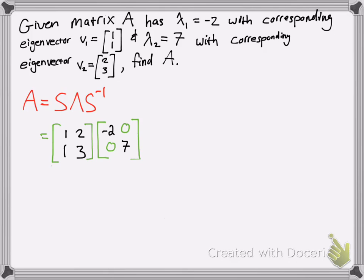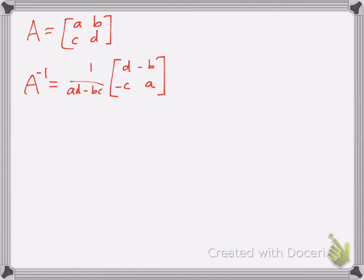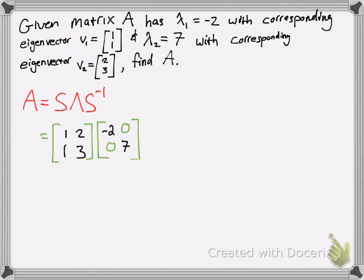Now we need to find S inverse. If you have a matrix [[a, b], [c, d]], the shortcut for finding the inverse is: take 1 over the determinant, flip the main diagonal, and use opposite signs on the b and c values.